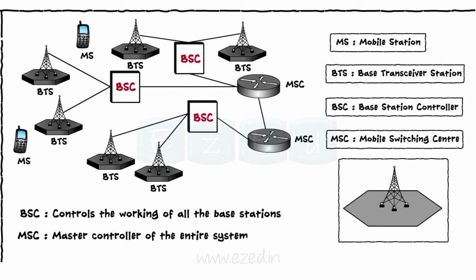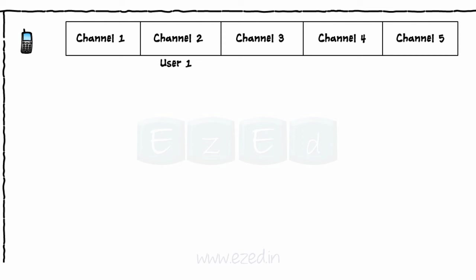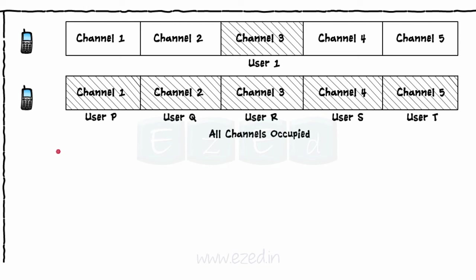These MSCs are different for different areas. From MSC of area 1, the signal is transmitted to MSC of area 2, where it follows the reverse sequence: MSC to BSC, BSC to BTS, and BTS to MS. Whenever a user makes an attempt to call someone, a separate channel is assigned by the MSC. If all channels are already occupied by other users, the user has to wait, receiving a notification such as 'Call cannot be completed' or 'Network error'.